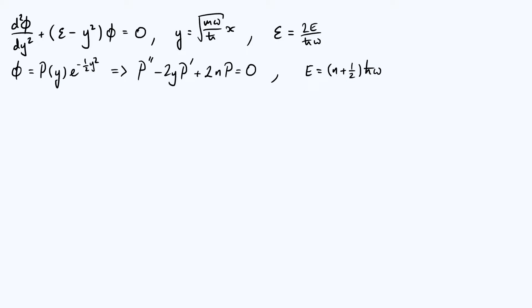Hello everyone, this is the fourth video in my series on the quantum harmonic oscillator. This video is going to be all about Rodriguez formula and Hermite polynomials, but I just wanted to start by giving a very quick recap of what we've done in the first three videos.